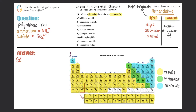For part (a), we have rubidium bromide. First we have to find out if rubidium bromide is ionic or covalent. Rubidium is a metal, and as soon as you see a metal the only bond that has a metal in it is an ionic bond, so this would be an ionic compound. Now, how do we write the formulas for ionic compounds? We use the crisscross method, which comes from knowing the oxidation states.